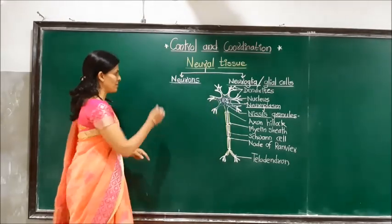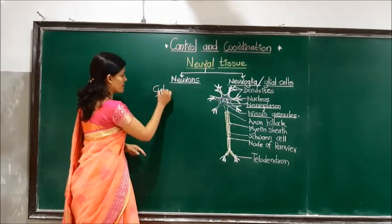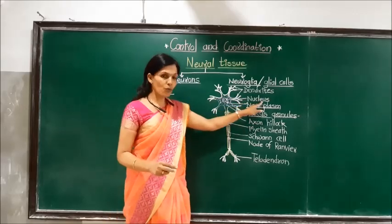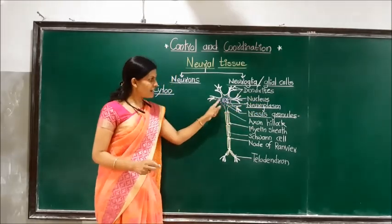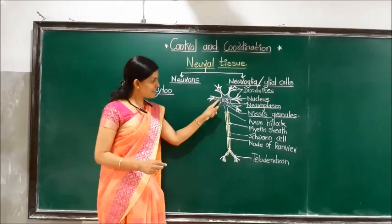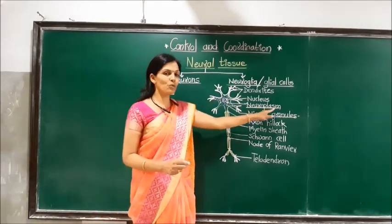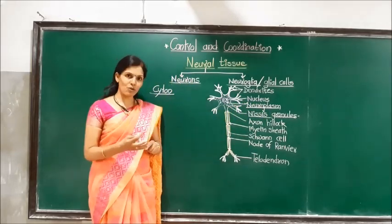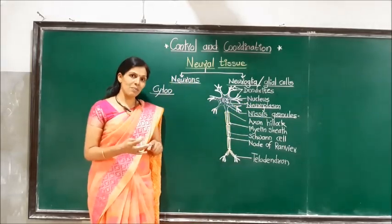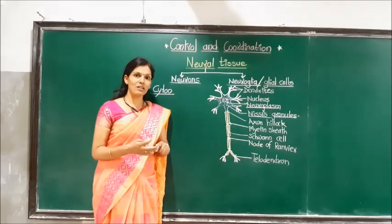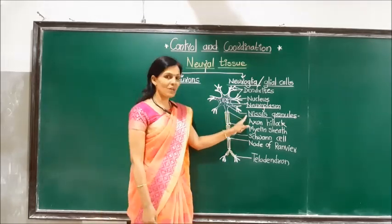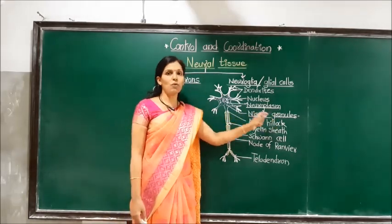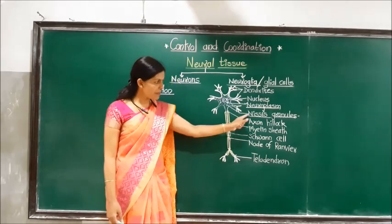First we will focus on the cytone. The cytone has a distinct nucleus with a nucleolus and a cytoplasm. The cytoplasm of the cytone is also called neuroplasm. It consists of many cell organelles like mitochondria, Golgi apparatus, rough endoplasmic reticulum, Nissl granules, and neurofibrils.